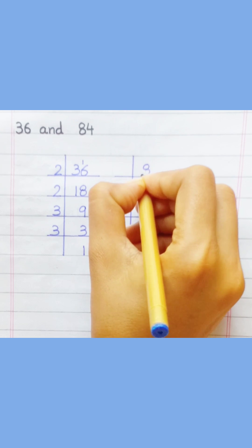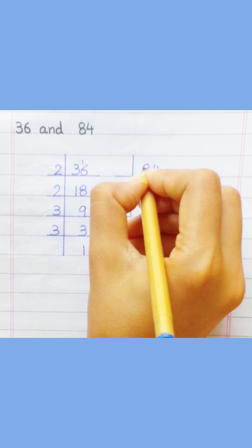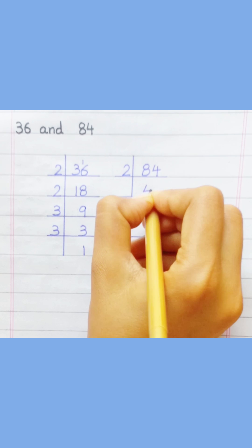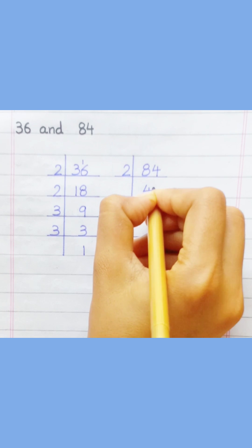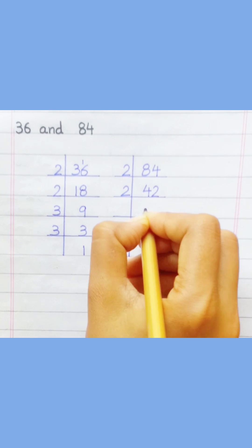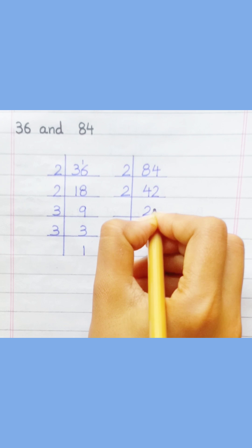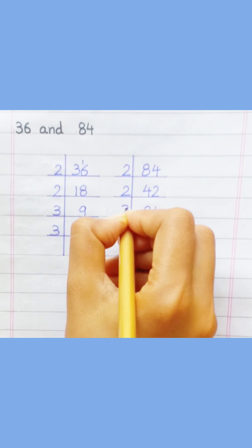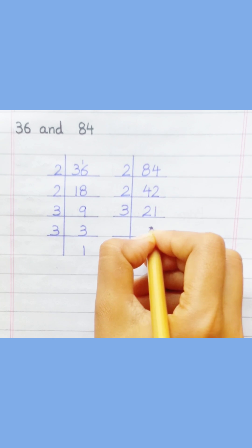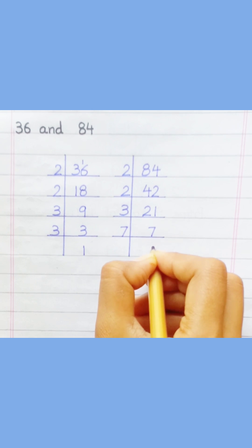Eighty-four: two fours are eight, two twos are four, two twos are four, two ones are two, three sevens are twenty-one, seven ones are seven.